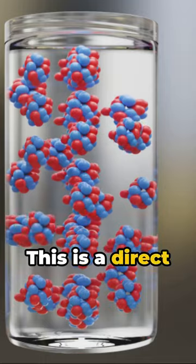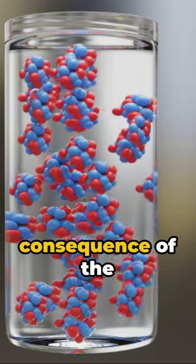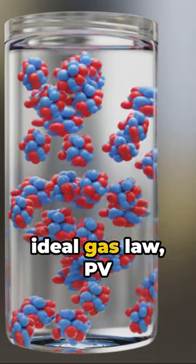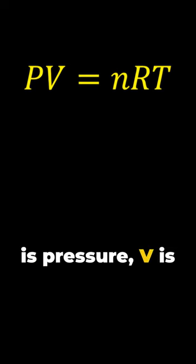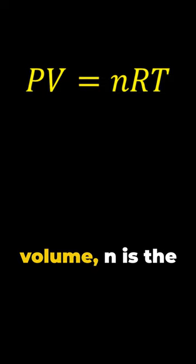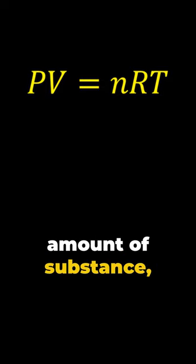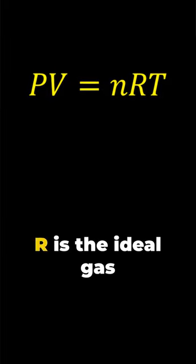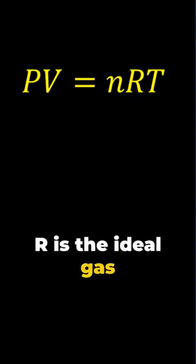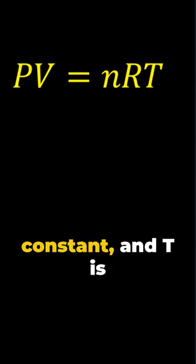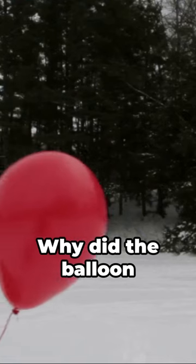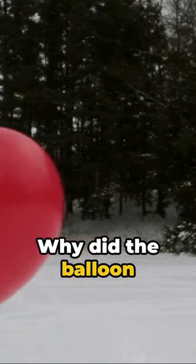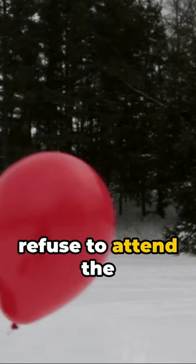This is a direct consequence of the ideal gas law, PV equals nRT, where P is pressure, V is volume, N is the amount of substance, R is the ideal gas constant, and T is temperature in Kelvin.